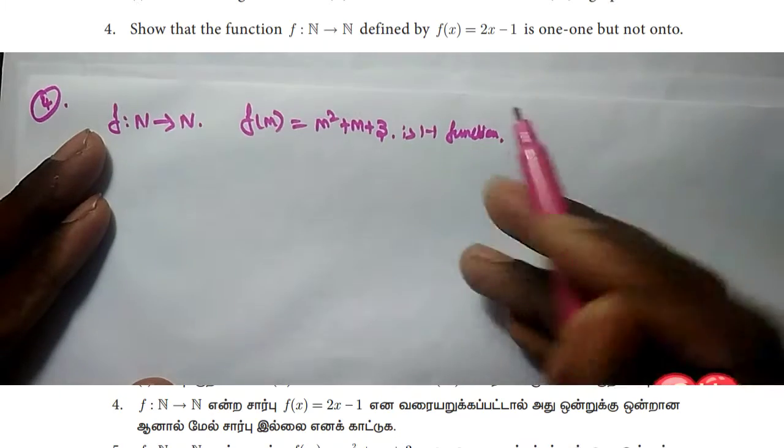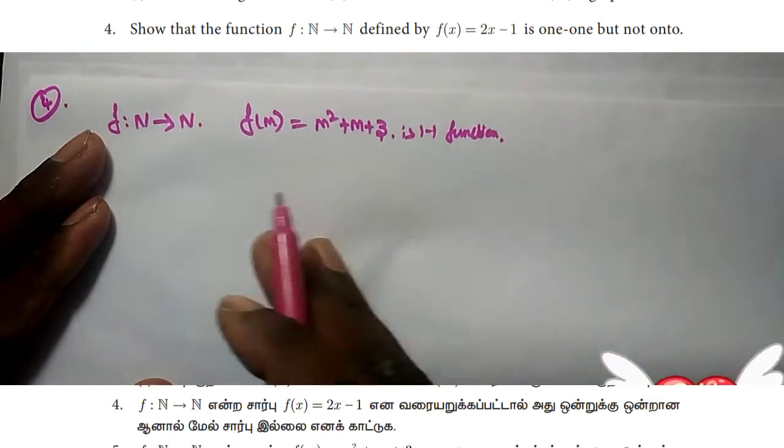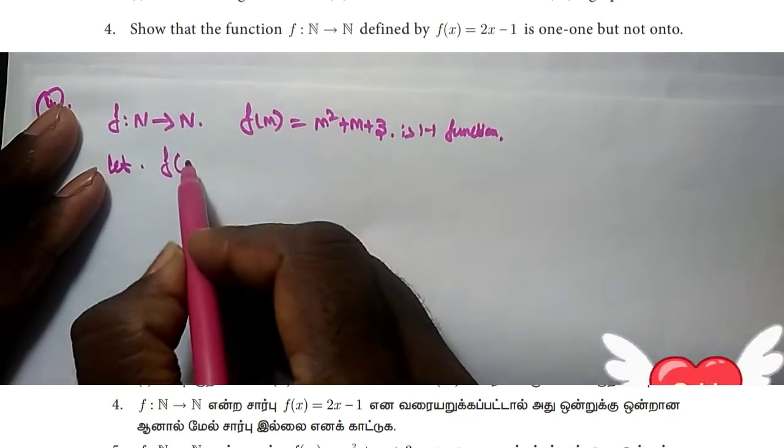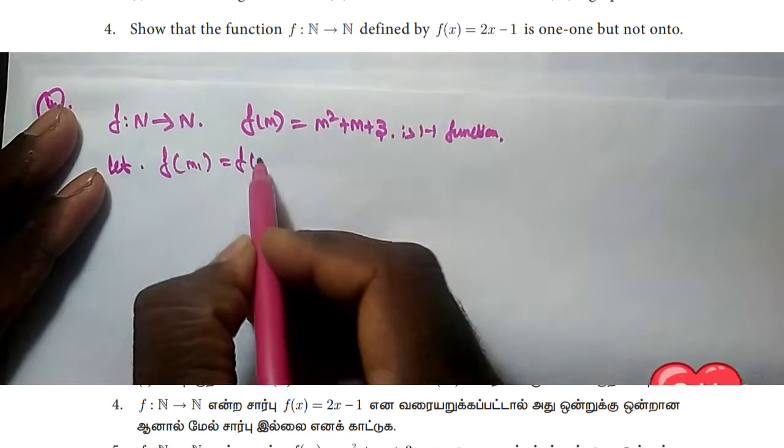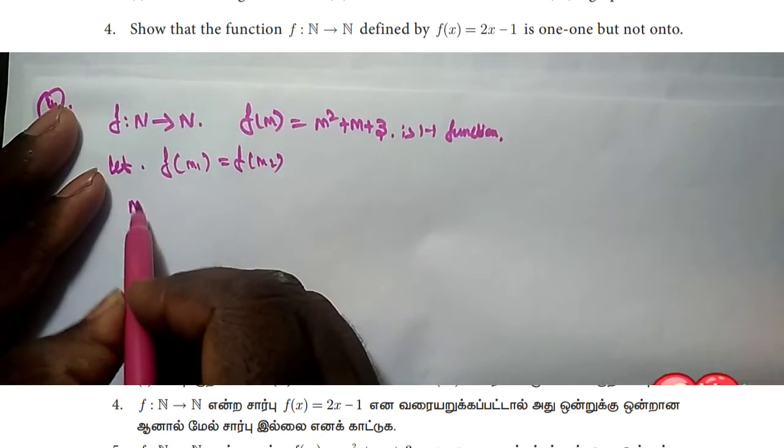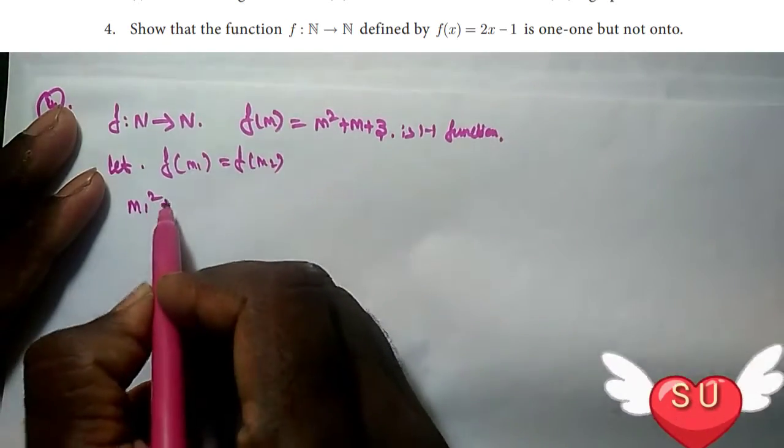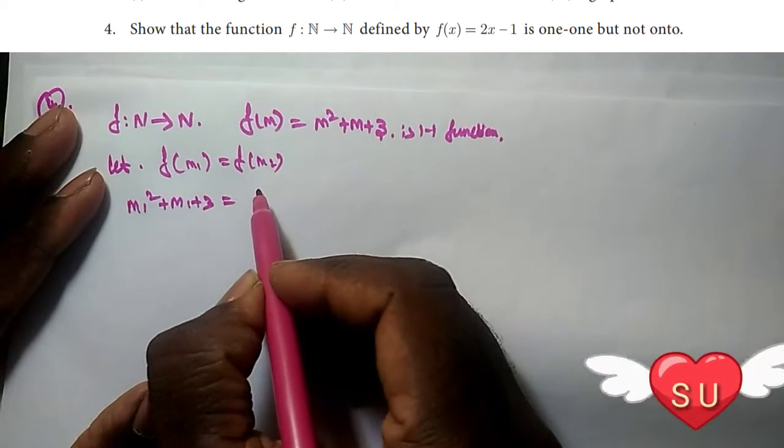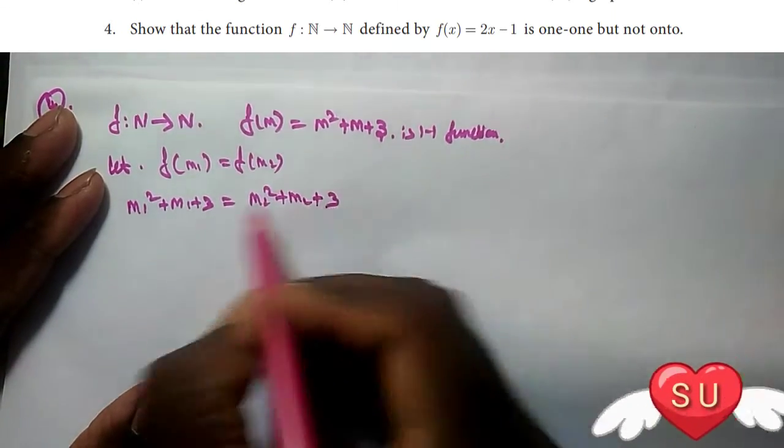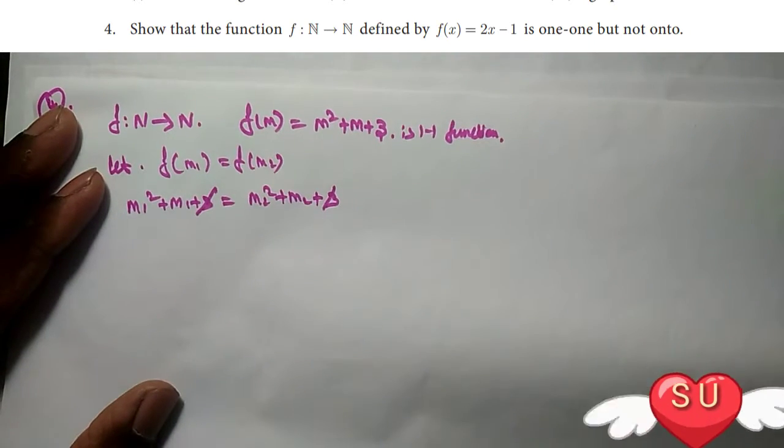To prove it's one-to-one, we take f(m1) equal to f(m2). So f(m1) gives us m1 squared plus m1 plus 3 equals m2 squared plus m2 plus 3. The plus 3 terms cancel out on both sides.